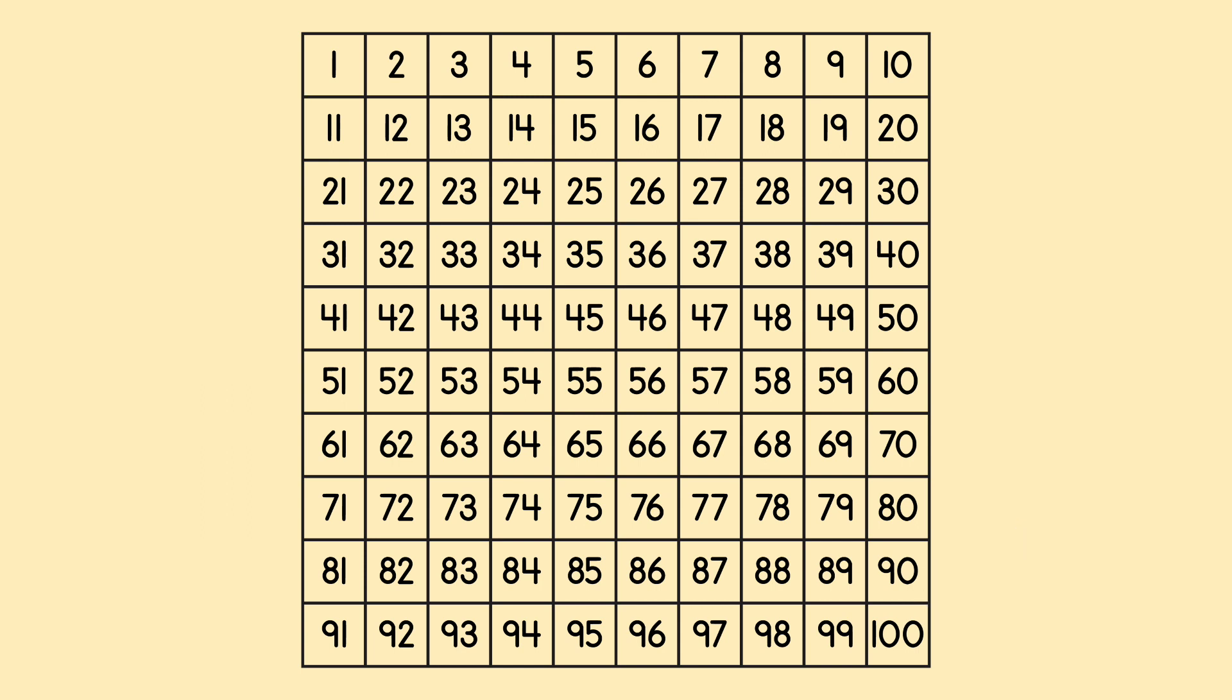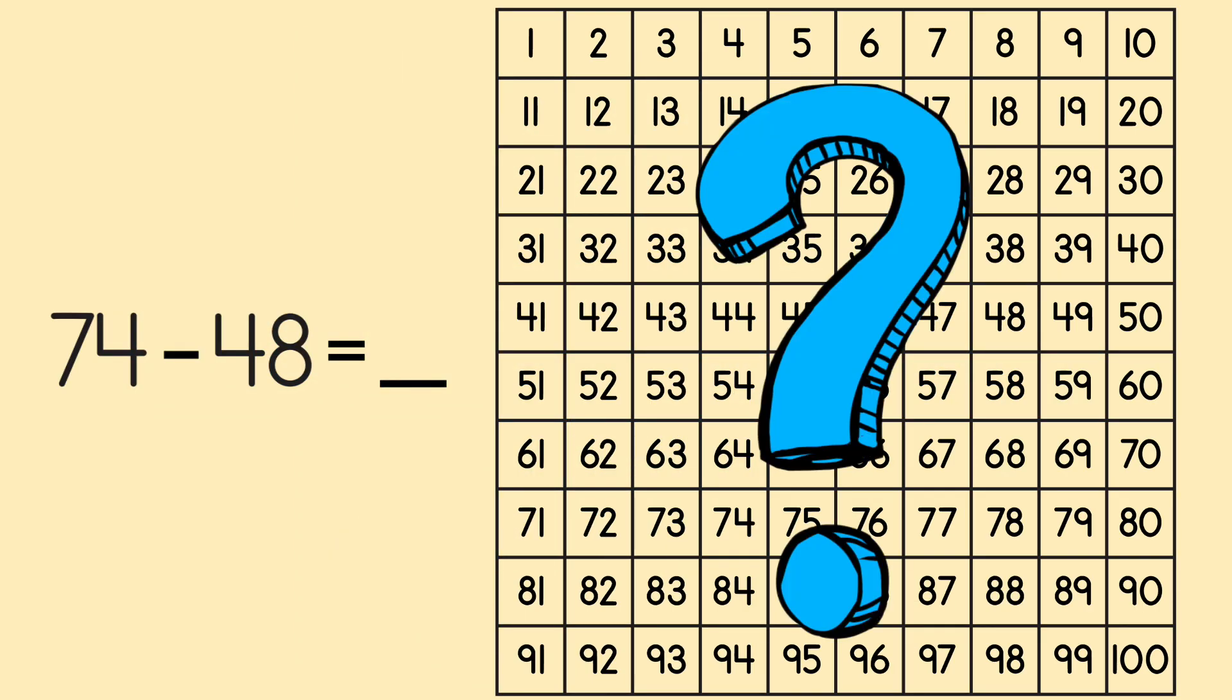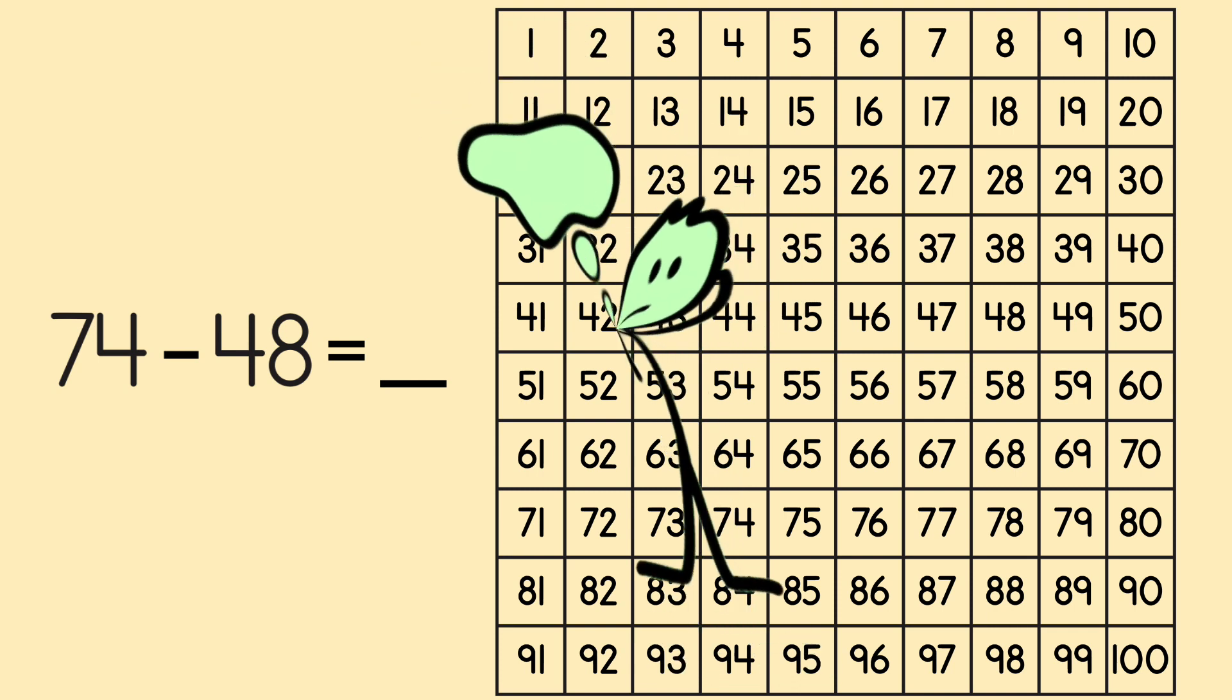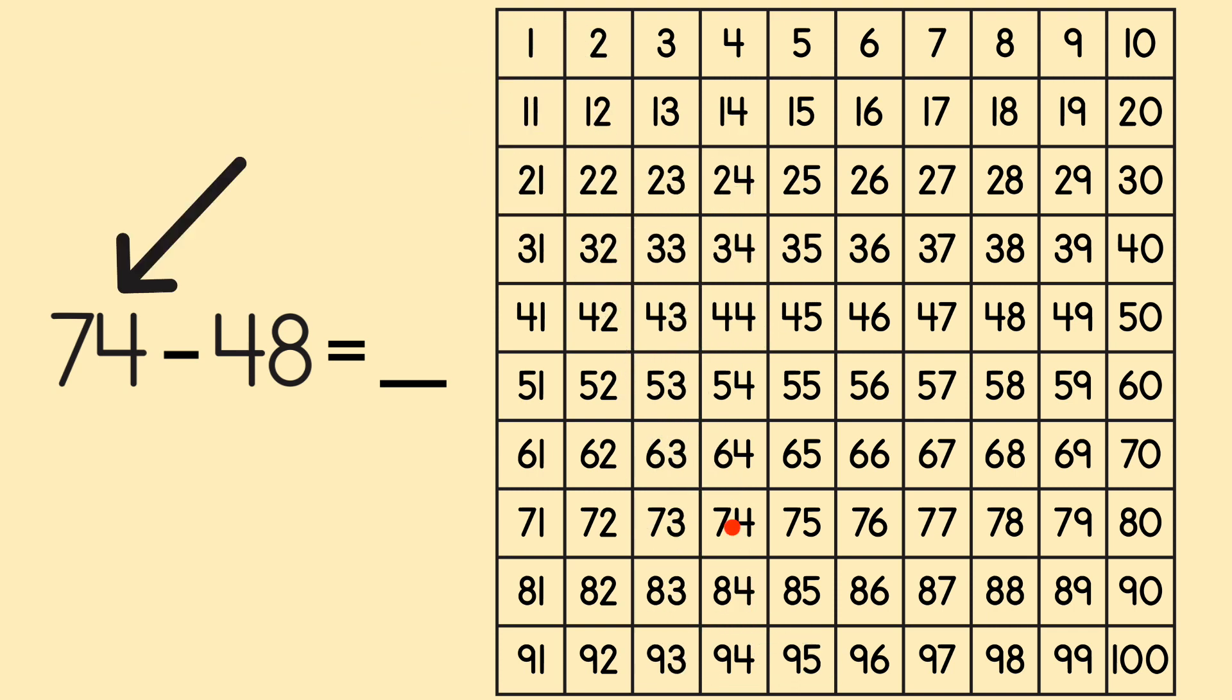So now he had the hundreds chart and his number sentence. What next? Kelvin remembered that when we subtract, we find the first number on the hundreds chart and count either to the left or up.